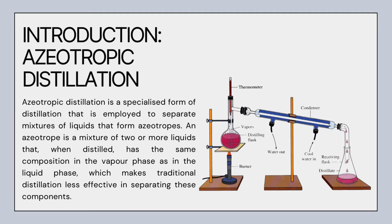Azeotropic distillation is a specific type of distillation process used to separate mixtures of liquids that form an azeotrope. An azeotrope is a mixture of two or more components that exhibits unique properties such as having a constant boiling point and composition. During the distillation process, the vapor and liquid phase have the same composition, which makes it challenging to separate the components by normal traditional distillation methods.